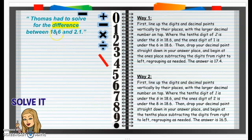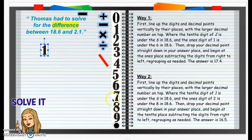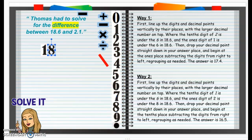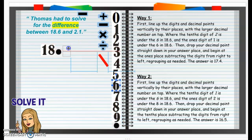Well, what do we need to do with the decimals? Line them up. So we are going to have 18 and 6 tenths — put that decimal there, and we have that 6.